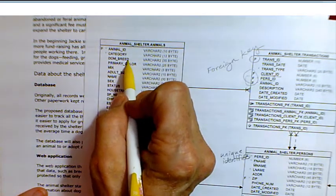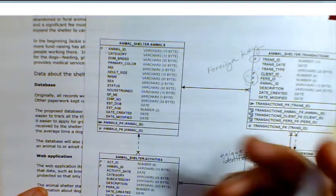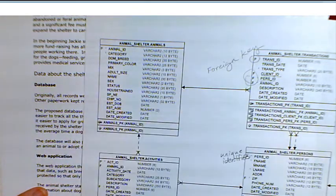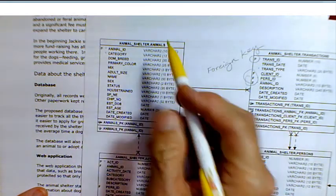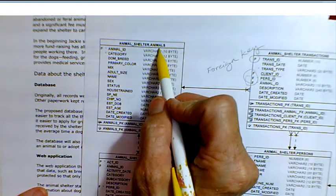Or breed: it's a pit bull, it's a German shepherd, it's a chihuahua. And we've got primary color, mix, size, so on and so forth. These are the attributes that describe this entity. In the database, this is the table animals, and these become the columns in the table.